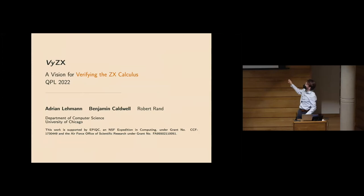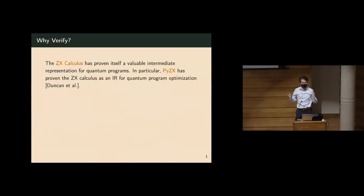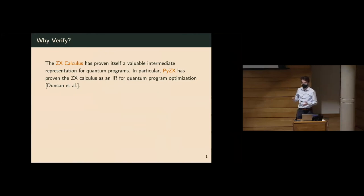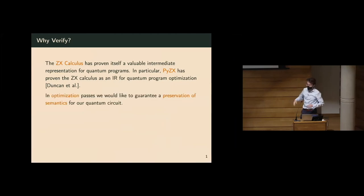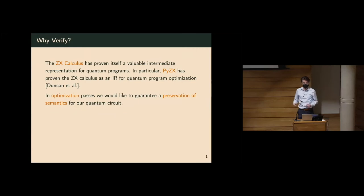Because when we say 'a vision for verifying the ZX calculus,' that immediately asks the question: why do we need to verify it? What's the purpose of that? Obviously, we're not going back to check the mathematics. What we're really doing is creating a library that can be used by other software engineers to build operations on ZX diagrams that have the ability to prove facts about them, like in optimization. We might want to guarantee that our optimization patches preserve semantics.